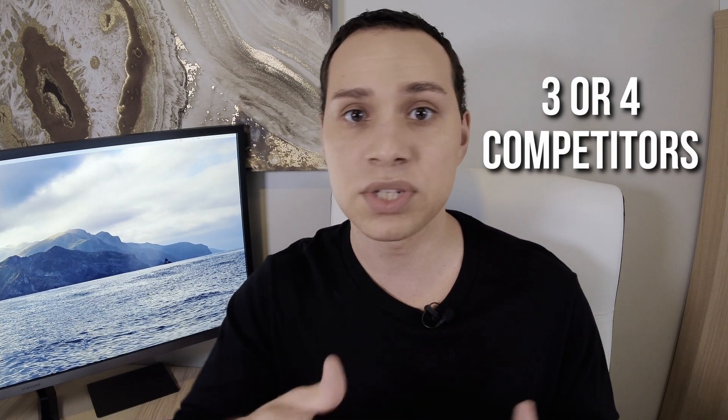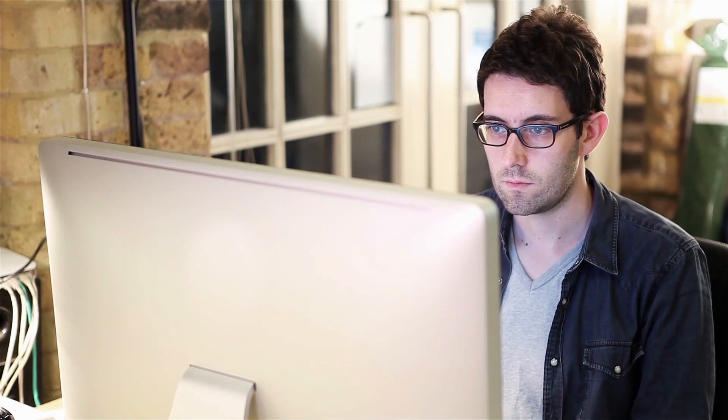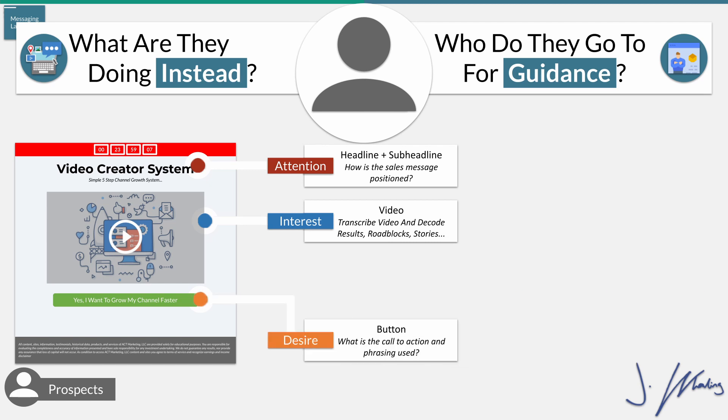If you're not quite sure what to include for your headline or how other people in your niche are using interest and desire in their videos, choose three or four competitors and go understand the messaging landscape — what they're saying to your potential customers in terms of benefits, features, and types of offers or calls to action. Looking at other sales messages in your niche is going to help you a tremendous amount in communicating with your ideal customer.